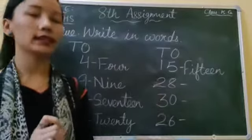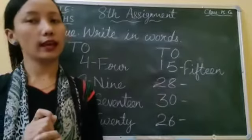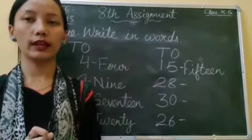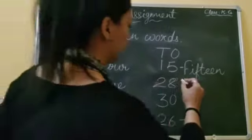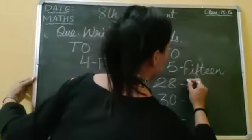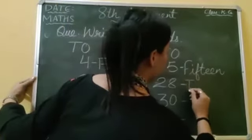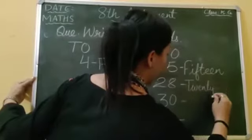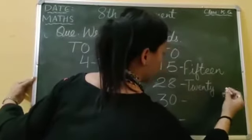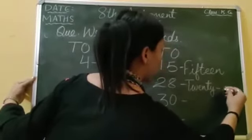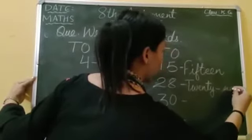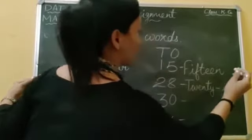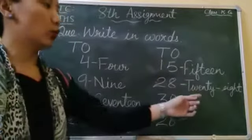Next, we have 28. What is the spelling of 28? T-W-E-N-T-Y dash E-I-G-H-T. Twenty-eight.